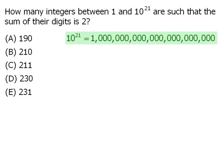This means that all integers between 1 and 10 to the power of 21 will have at most 21 digits. Now for the purposes of this question, we're going to say that all numbers in this range will have exactly 21 digits.